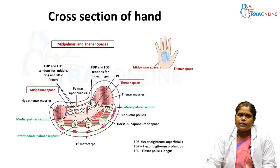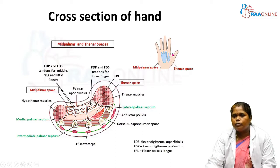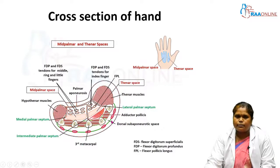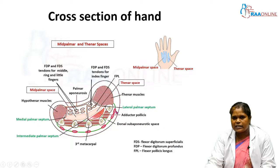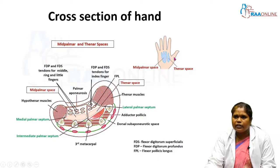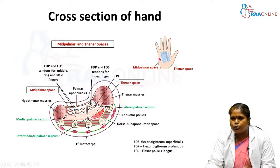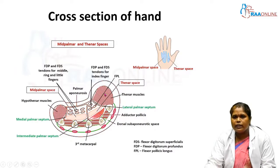Now we will look at a cross-section of the hand. This is the cross-section of the right hand. On the lateral aspect near the thumb we have the thenar group of muscles, and below the little finger on the medial aspect we have the hypothenar group of muscles. By looking at these two groups we can identify the lateral and medial aspects of the hand.